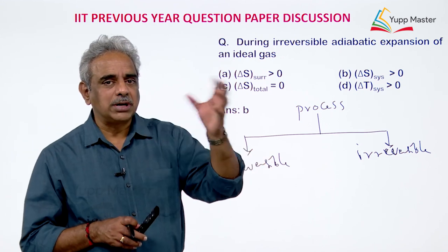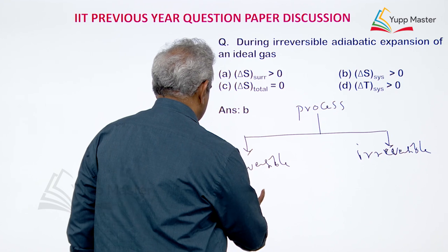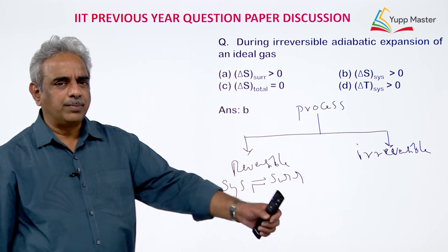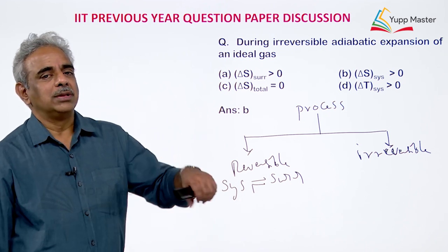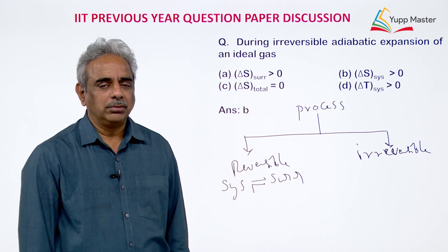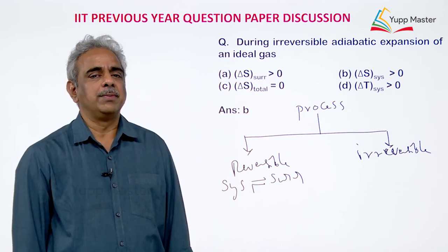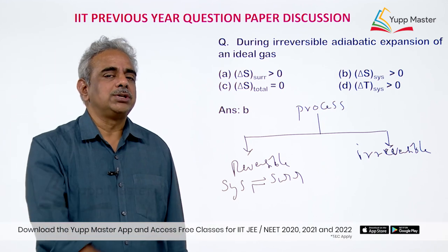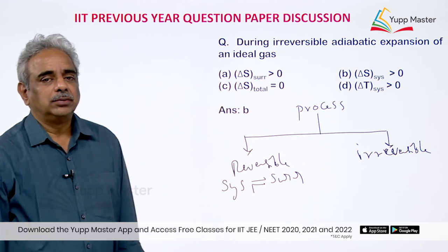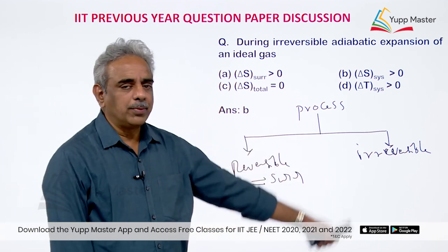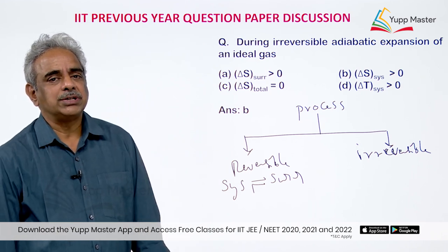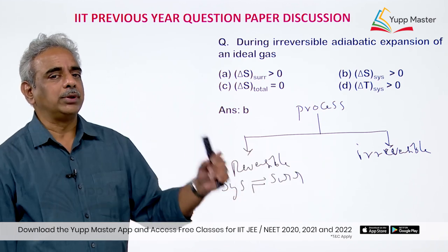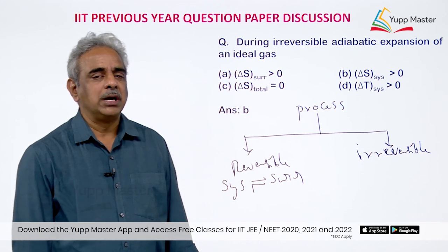In a reversible process, the system and surrounding will always be in equilibrium. Every step, whatever change happens to the system, the opposite happens to the surrounding — whether by means of temperature, heat, or work. But in an irreversible process, system and surrounding do not exist in equilibrium. Irreversible processes are the ones really taking place; reversible processes only provide a reference for studying thermodynamics.